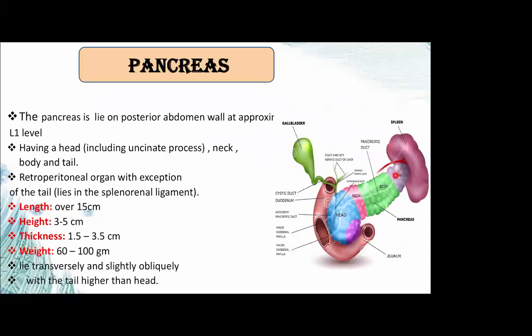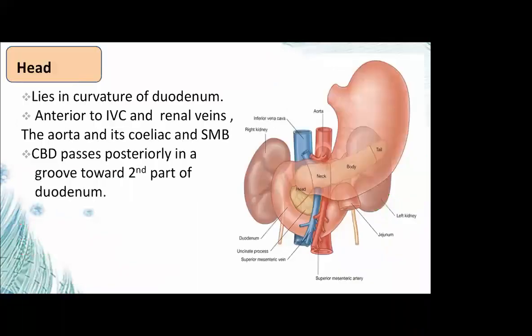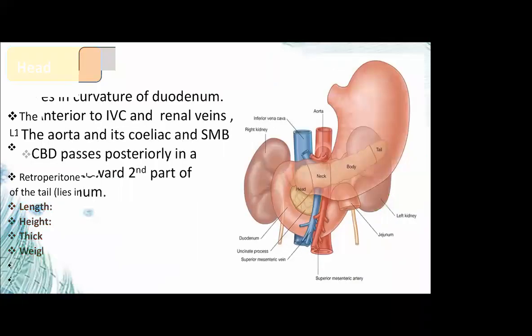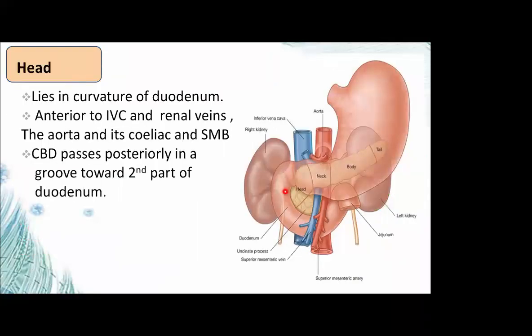The pancreas lies in the splenorenal ligament. Its length is about 15 cm, height 3 to 5 cm, and thickness 1.5 to 3.5 cm, weighing 60 to 100 grams. The head lies in the curvature of the duodenum, anterior to the posterior abdominal wall structures — that is, the inferior vena cava, aorta, and the celiac and superior mesenteric branches.